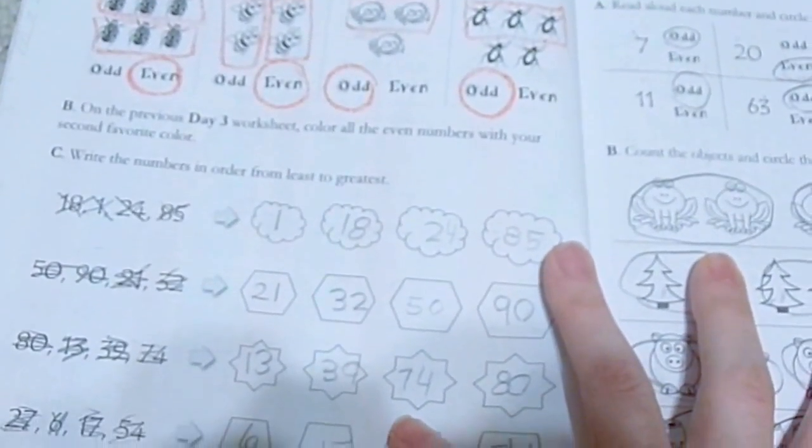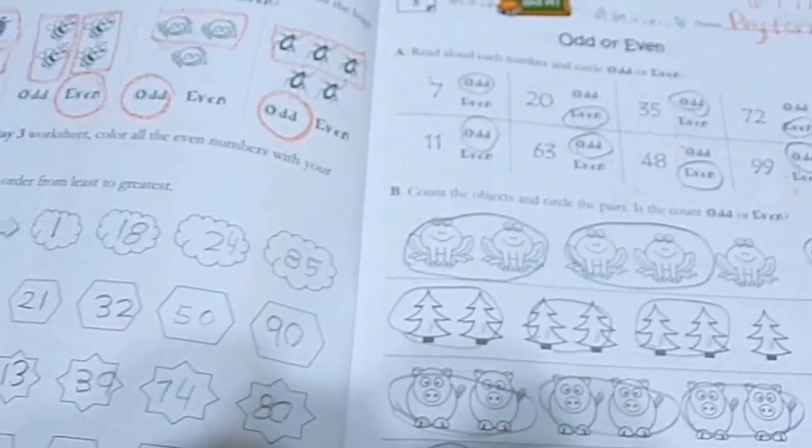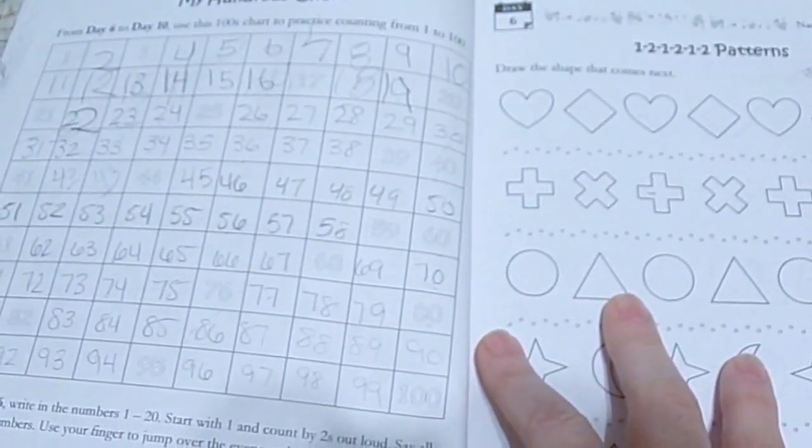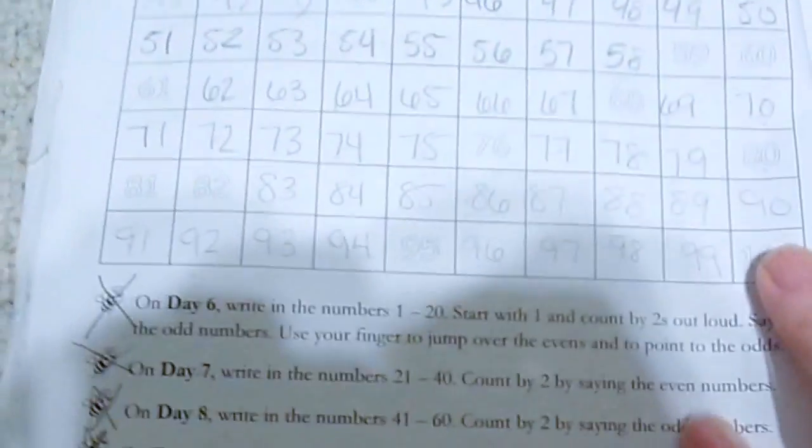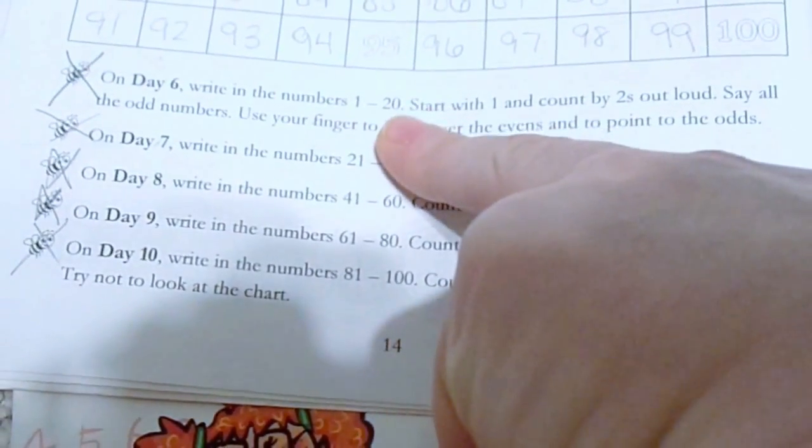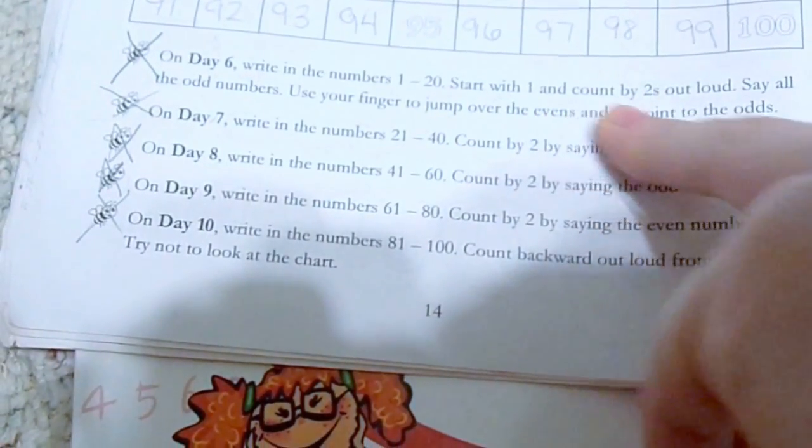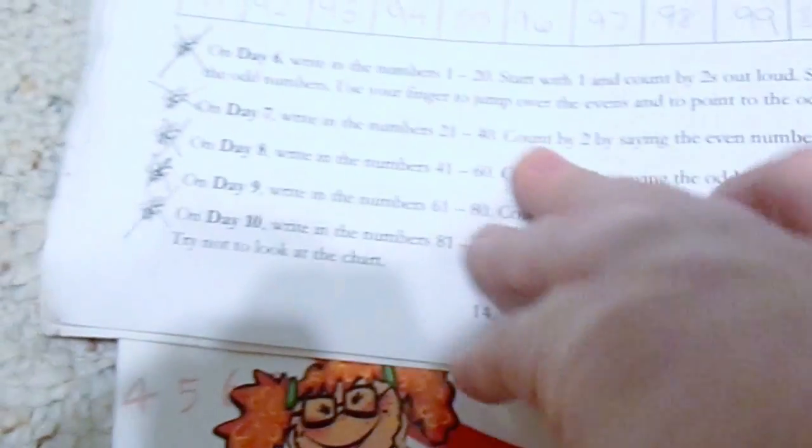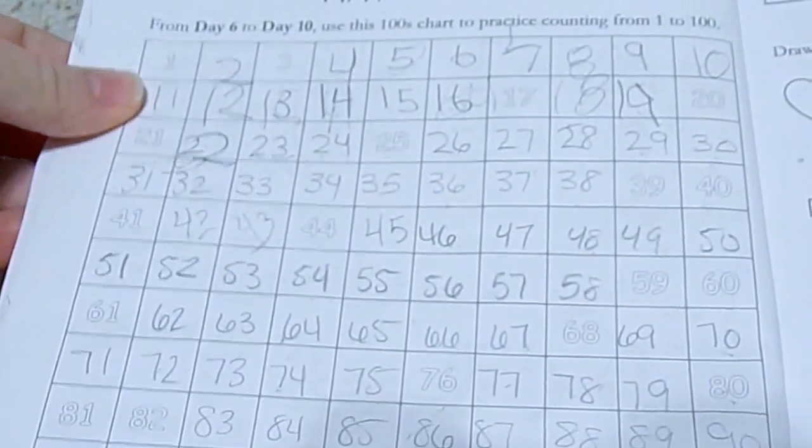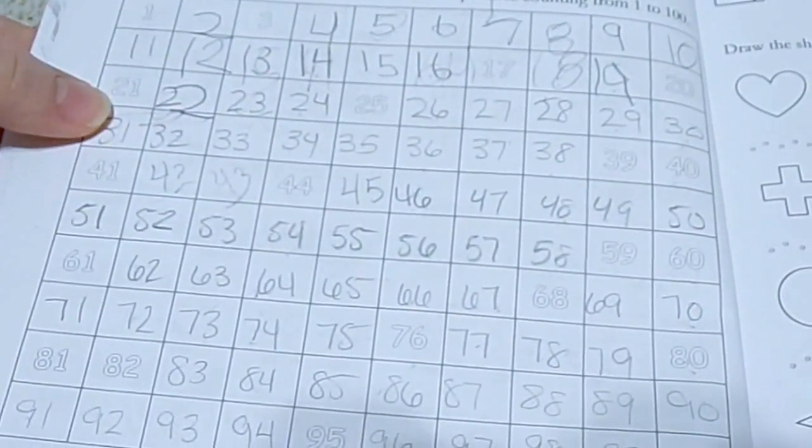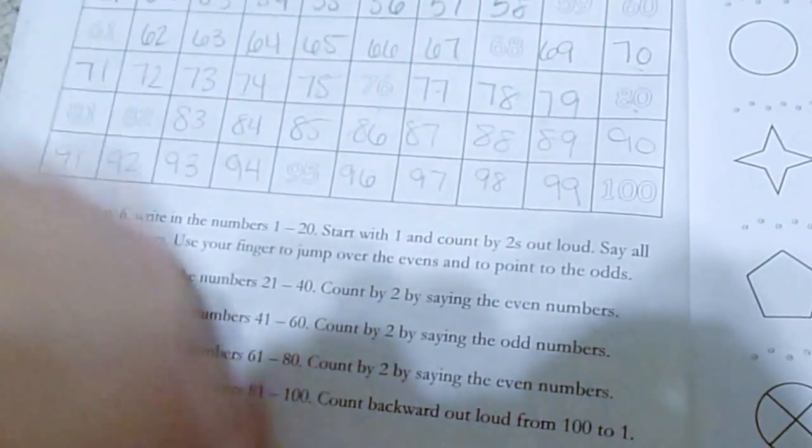This one's on even numbers, then odd or even, hundreds chart that they'll fill out. This one is from day six to day ten. What they'll do here is they will be using it. There's directions at the bottom. Day six: write the numbers 1 through 20 and then start with one and count by twos out loud. They give you an activity to do every day. You'll still have your day six, seven, eight, nine, and ten worksheets, but you will also do this beforehand. So you'll do 1 to 20, 21 to 40, and so on, and you'll be skip counting those days as well.